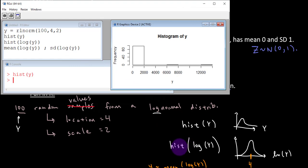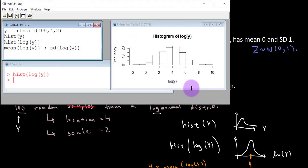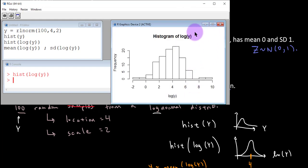Now the hist of the log of Y. Not so skewed. Quite the opposite. It looks pretty bell-shaped. Maybe not perfect.